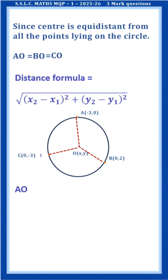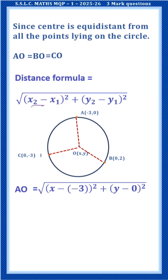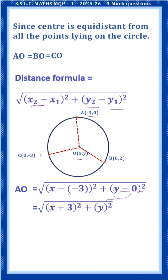Now let us calculate AO. Here x2 is x, x1 is -3, y2 is y, and y1 is 0. Substituting: AO = √((x+3)² + y²). Expanding using the (A+B)² formula: AO = √(x² + 6x + 9 + y²).